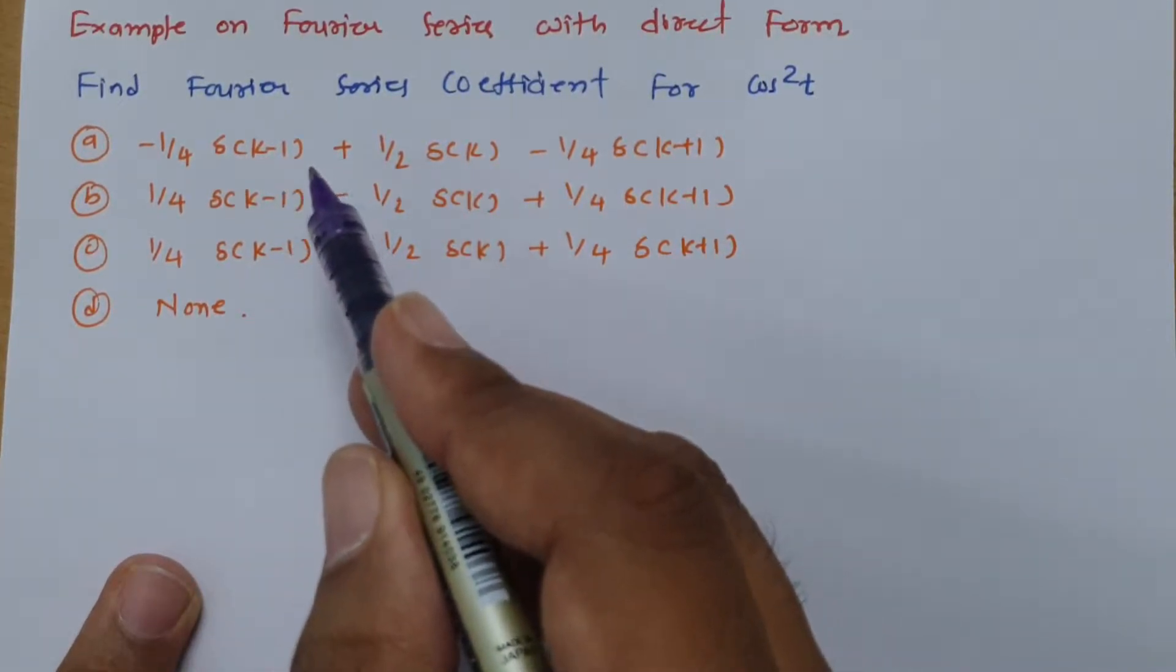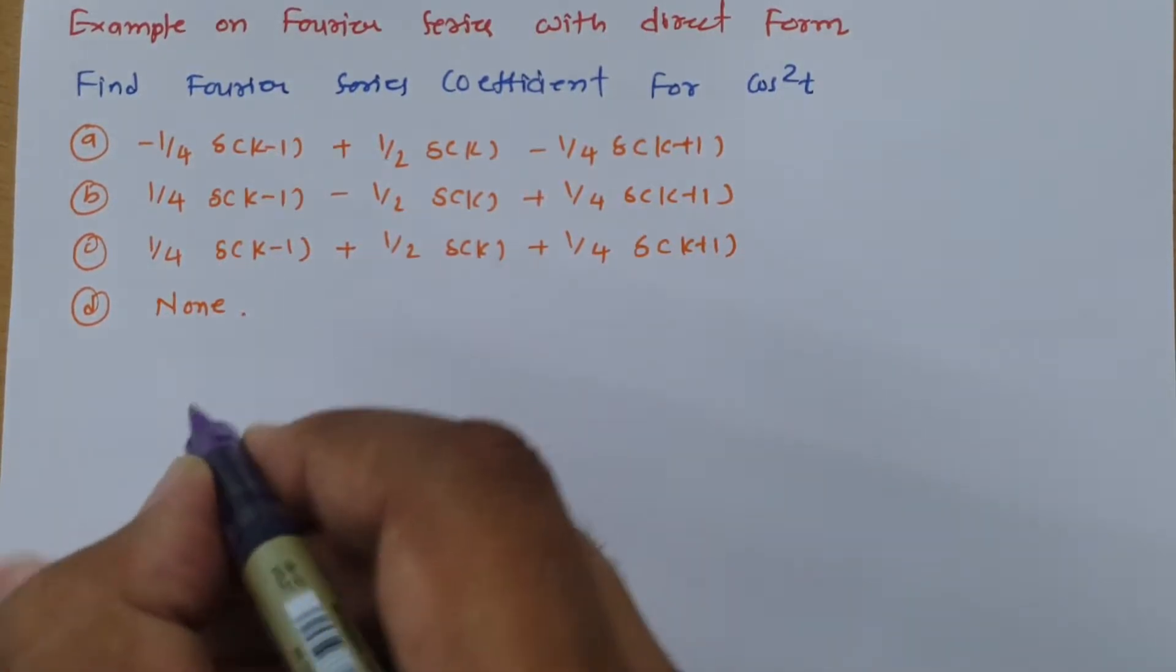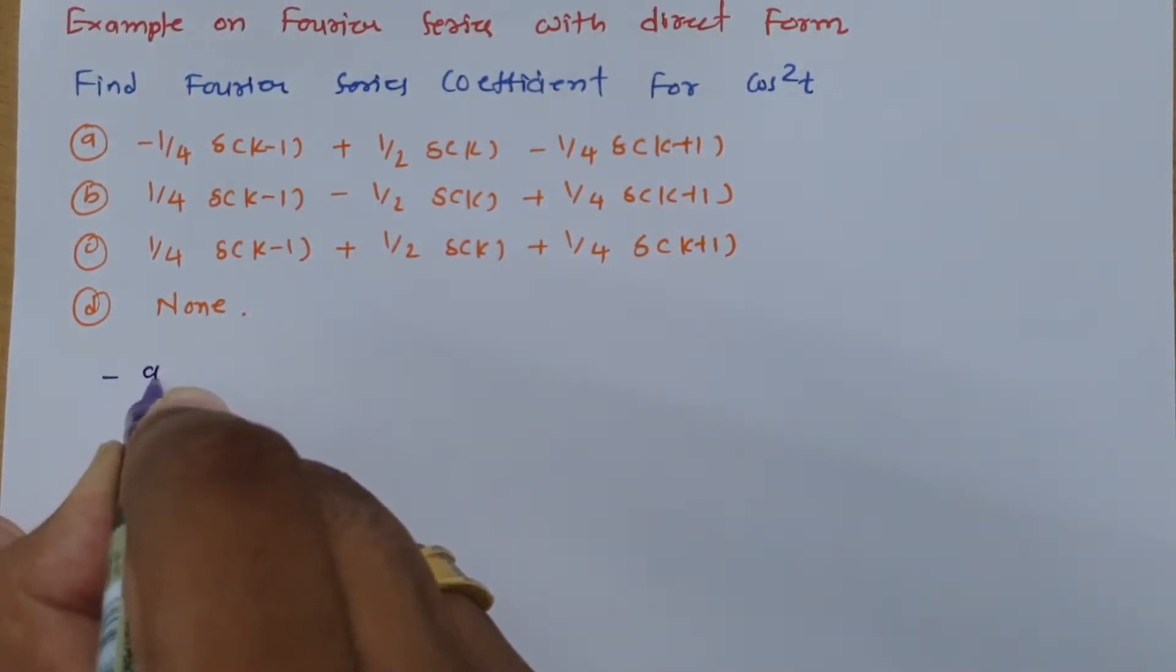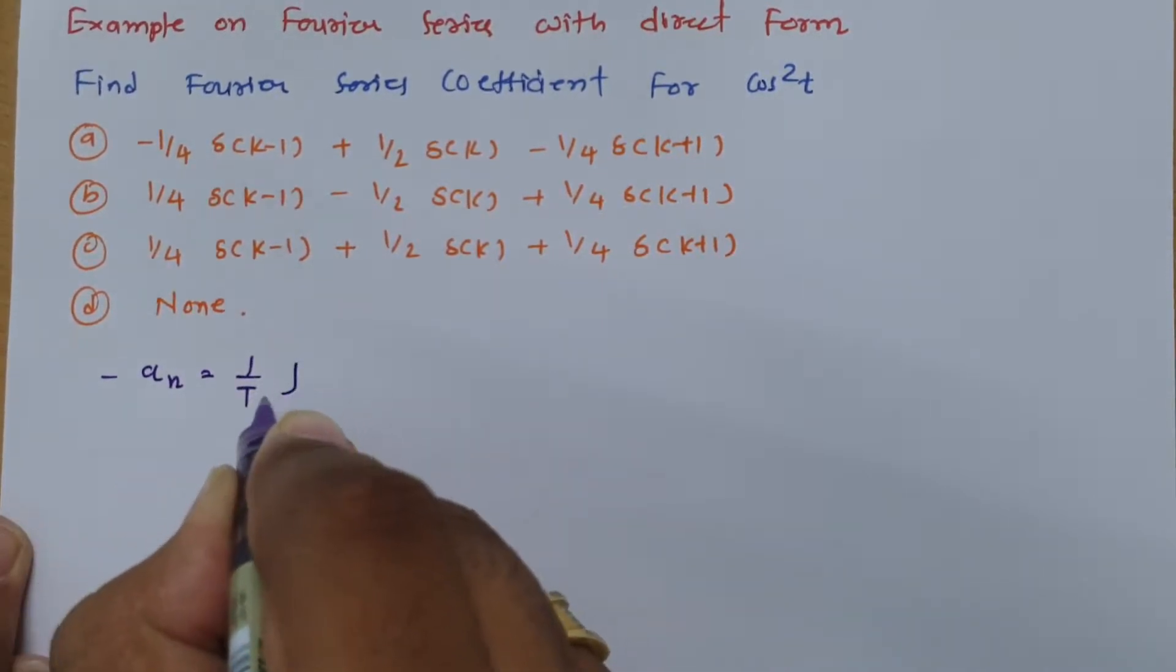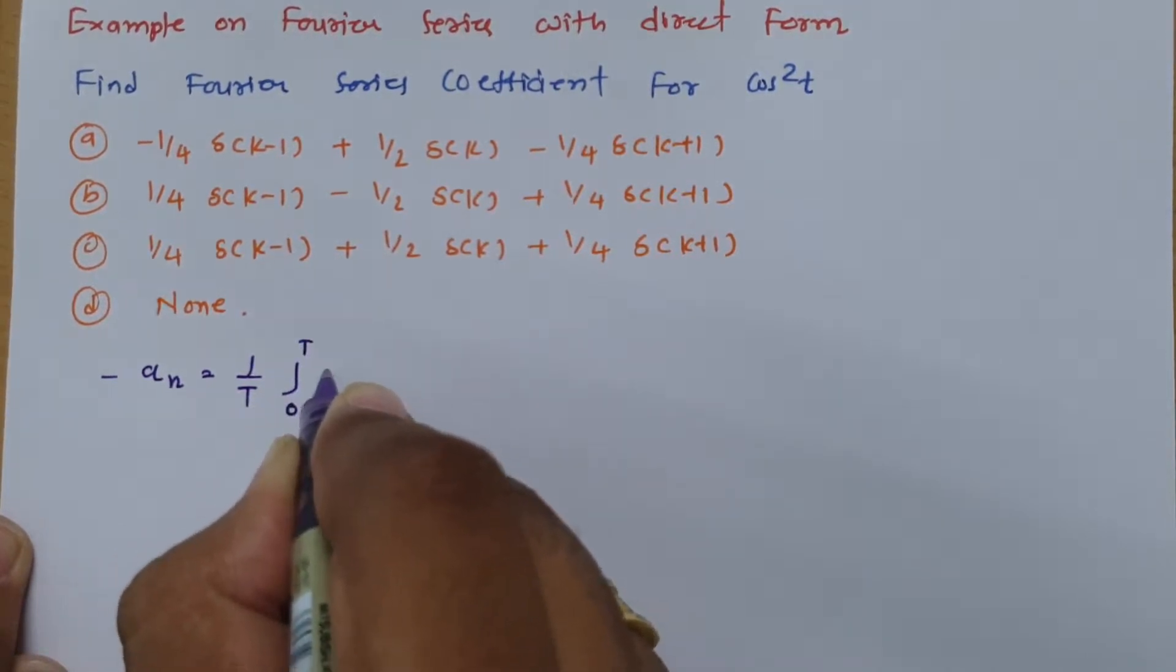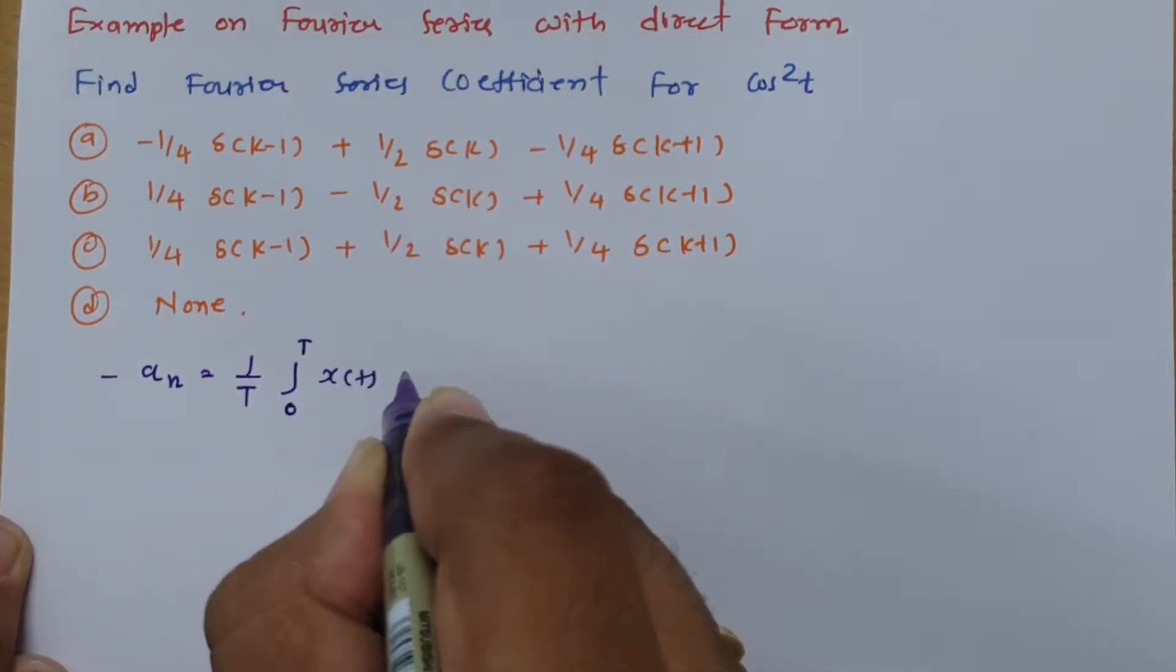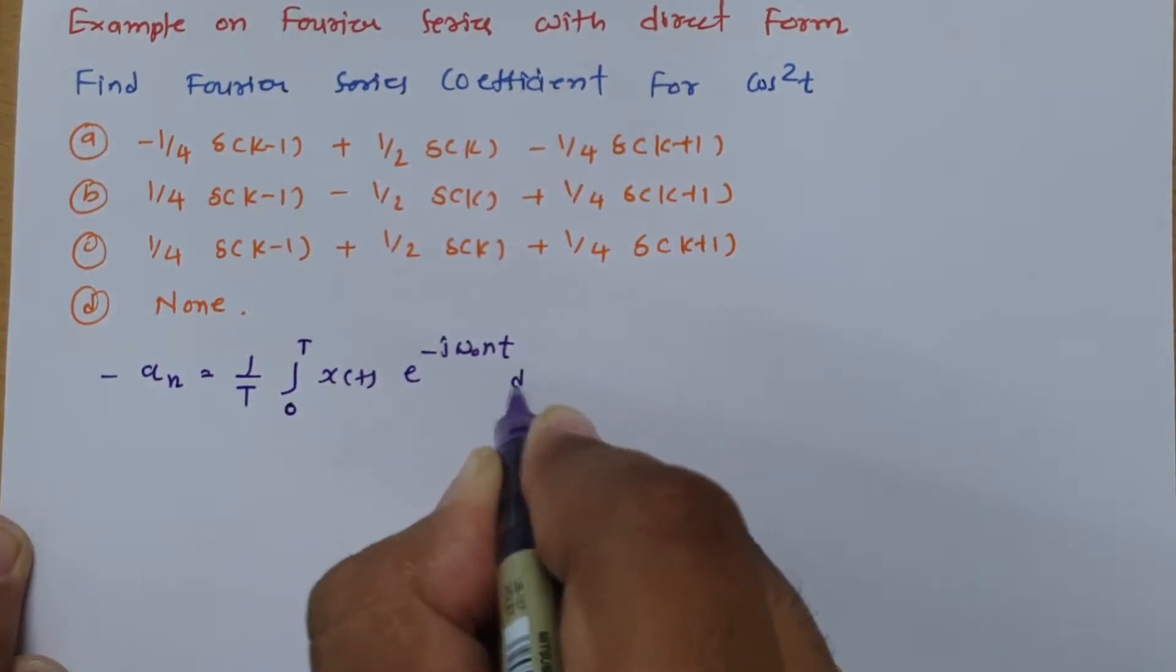Now see, the basic way of calculation of Fourier series coefficient, that is, I have already explained, it is what an is equals to 1 by T integration. If I say 0 to T, then it will be x(t) into e to the power minus j omega_0 n into t dt.